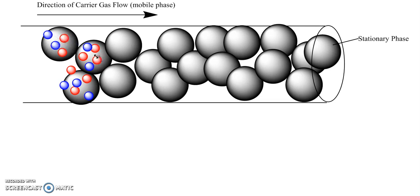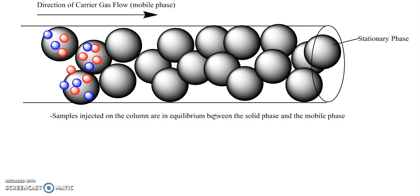Samples that are injected onto the column are in equilibrium between the solid phase and the mobile phase. So sometimes the blue and the red are stuck to the column and staying there; other times they are vaporized and the carrier gas is pushing them along the column.